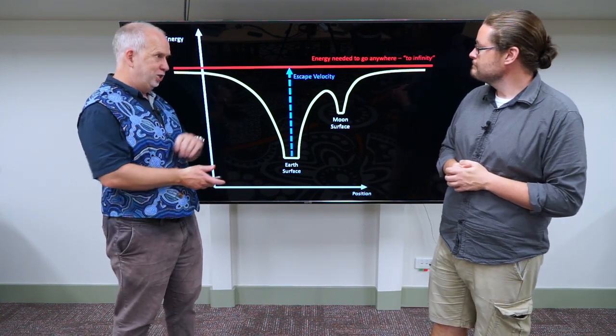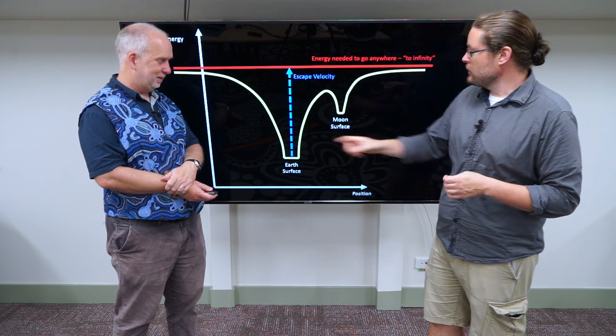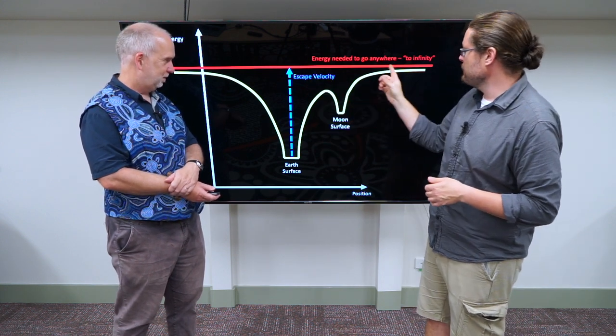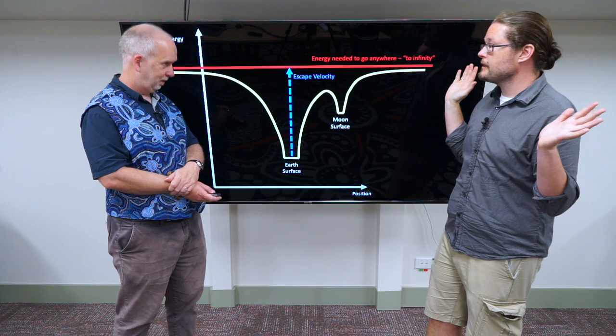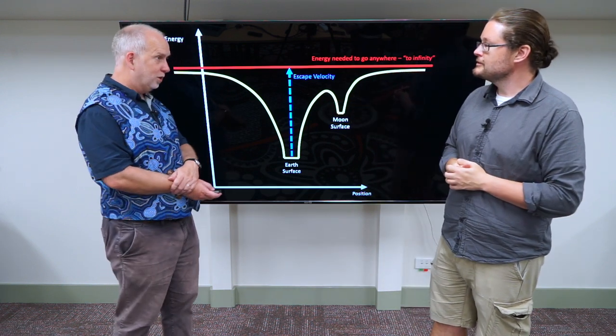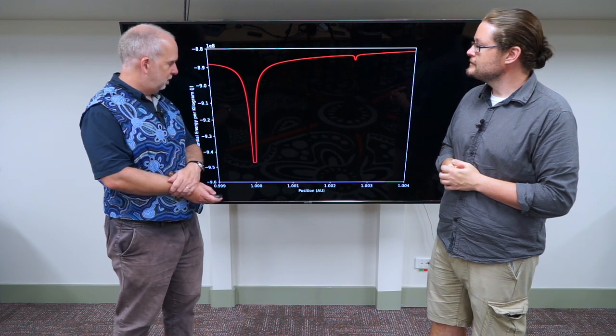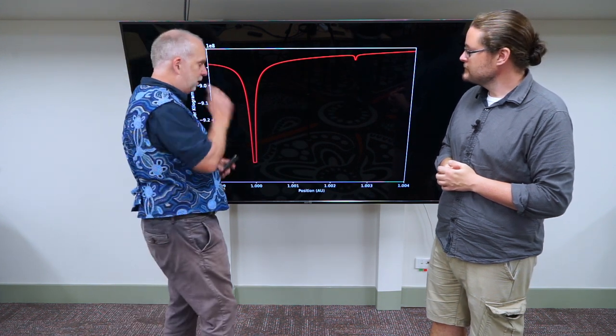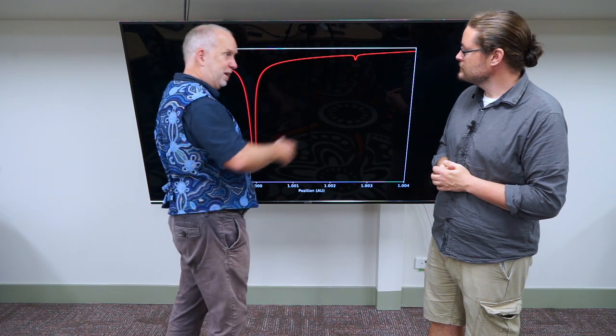If you give it this much energy, now it can go anywhere. So once we get to this point, we can choose to go to the Moon if we want, but we can go further off into space. But could we just keep cruising? We could. However, this is the Earth-Moon system to scale, and so if you give it this much energy, you can escape anywhere.